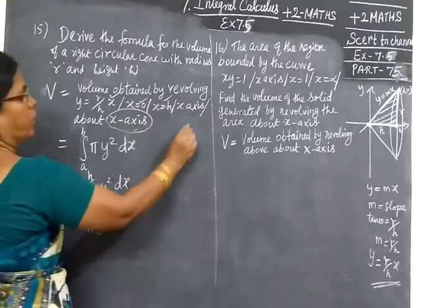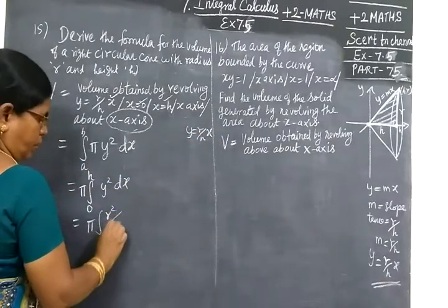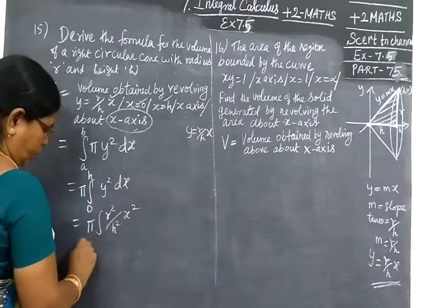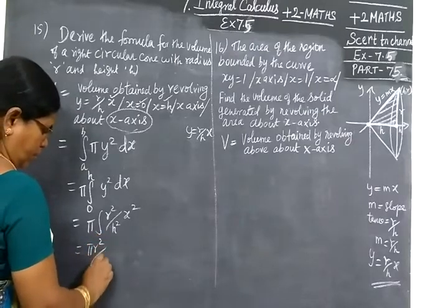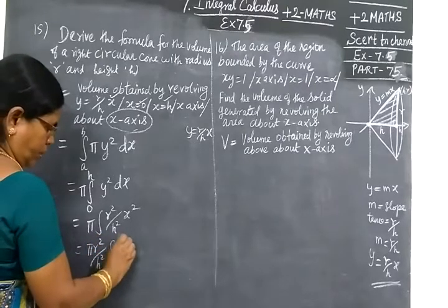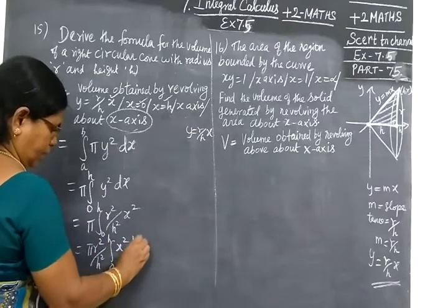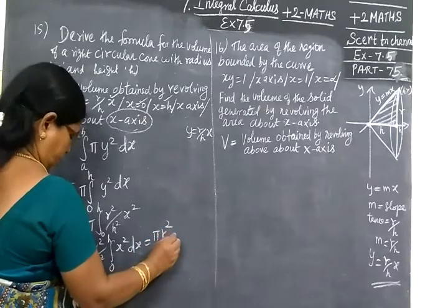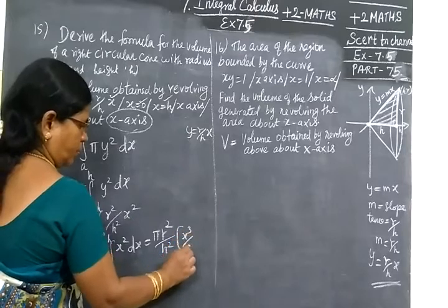Y equals R/H times x. So y² equals R²/H² times x². So taking outside, π R²/H² times integral of x² from 0 to H. So this equals π R²/H² times x³/3, with limit 0 to H.